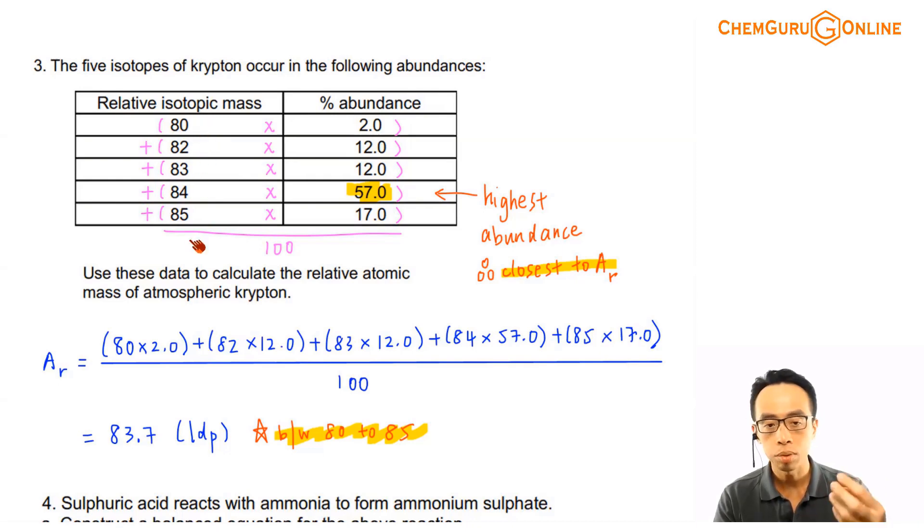Cannot be smaller than 80, because the smallest guy is 80. Cannot be bigger than 85, because the biggest guy is 85. So if it's an average, the value has to be between 80 to 85. So I can use it to verify my answer, see whether it is reasonable or not.